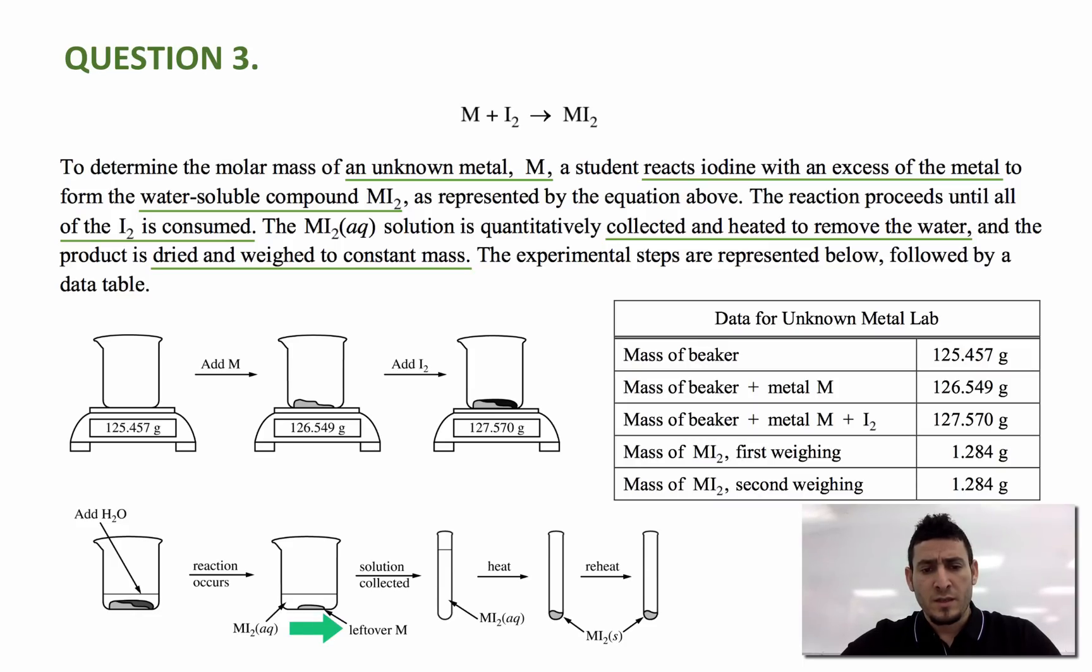The solution is collected, and then water is evaporated, and the tube was heated twice until that the mass of the compound MI2, it doesn't change, so remains constant, as we can see it from this table.